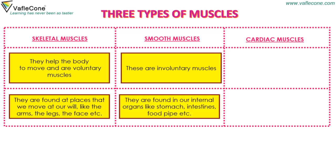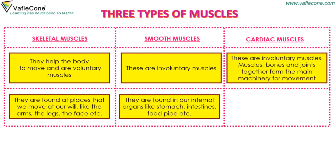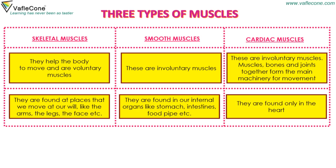Smooth muscles are involuntary muscles. They are found in our internal organs like the stomach, intestines, and food pipe. Cardiac muscles are involuntary muscles found only in the heart. Muscles, bones, and joints together form the main machinery for movement.